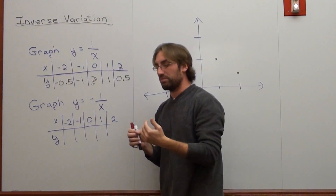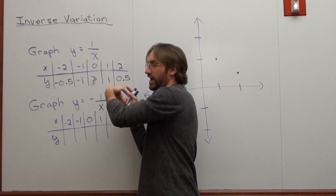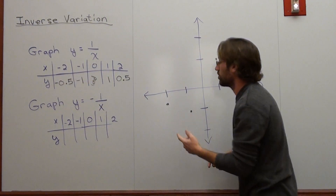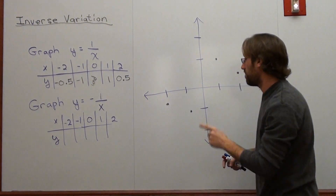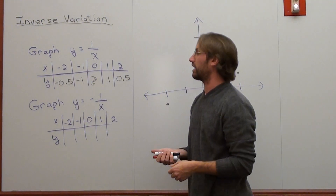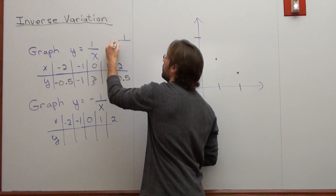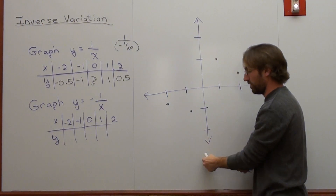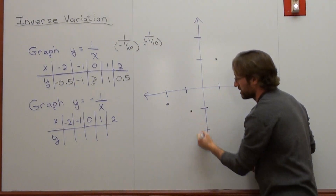As I get closer and closer to 0 from the left side, my values become extremely low. As I get further away, this side gets steadily closer to the y-axis, and this side gets steadily closer to the x-axis. For example, if I plugged in negative 10, this would be 1 over negative 10, which is negative 0.1. So the y-values are getting closer and closer to the x-axis as x drifts further away, but as x approaches 0, the values drift closer and closer toward the y-axis. If I did 1 divided by negative 1 over 100 — which is 0.01 — the value is negative 100. If I do 1 divided by negative 1 over 10, the value is negative 10.